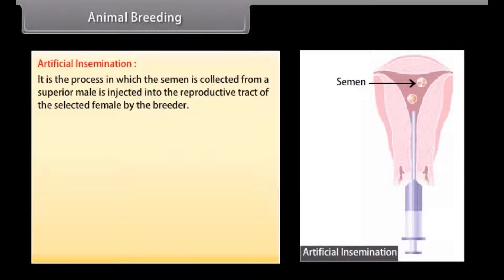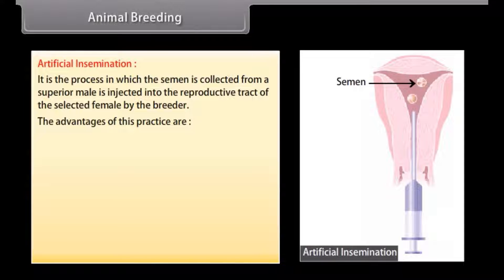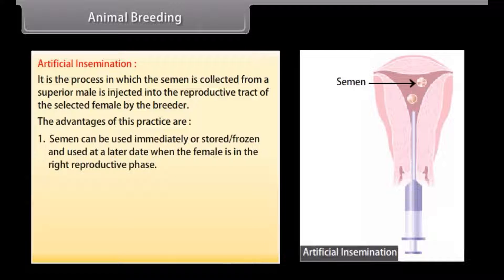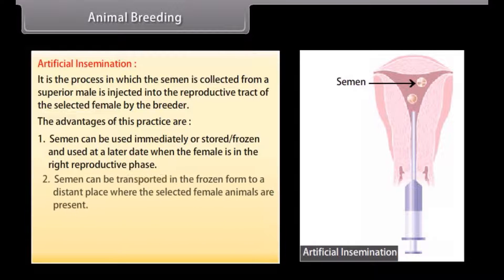For example, mule is produced by a cross between a male donkey and a female horse. Artificial insemination is the process in which semen is collected from a superior male and injected into the reproductive tract of the selected female by the breeder. The advantages of this practice are: semen can be used immediately or stored or frozen and used at a later date when the female is in the right reproductive phase.